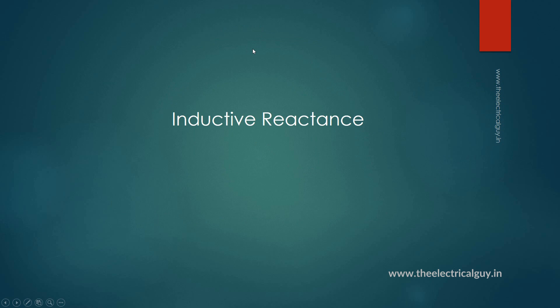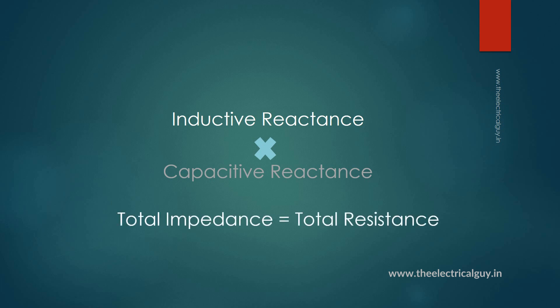So what kills inductive reactance? Yes — capacitive reactance. So you have to add an equal and opposite amount of capacitive reactance in the circuit. The effect of these two equal and opposing reactances — inductive and capacitive — will bring the circuit's total impedance equal to total resistance.